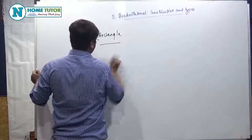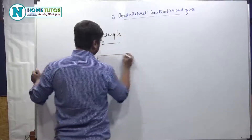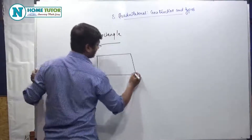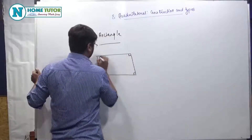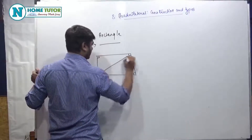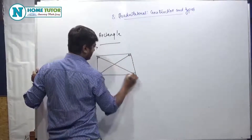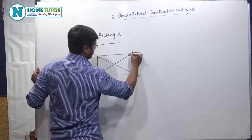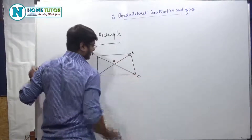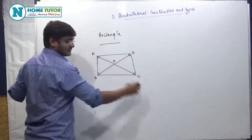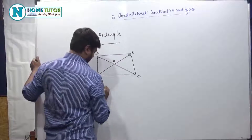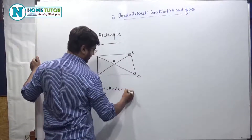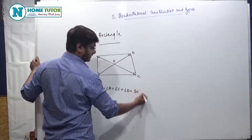Rectangle. Now, a rectangle is something of this type, which has opposite sides, and all angles are 90 degrees. Diagonals होती हैं. अब इसको अगर मैं नाम दे दूँ: A, B, C, D, and यहाँ पर O. 4 sides 90 degree होती हैं, मतलब कि angle A = angle B = angle C = angle D = 90 degree.